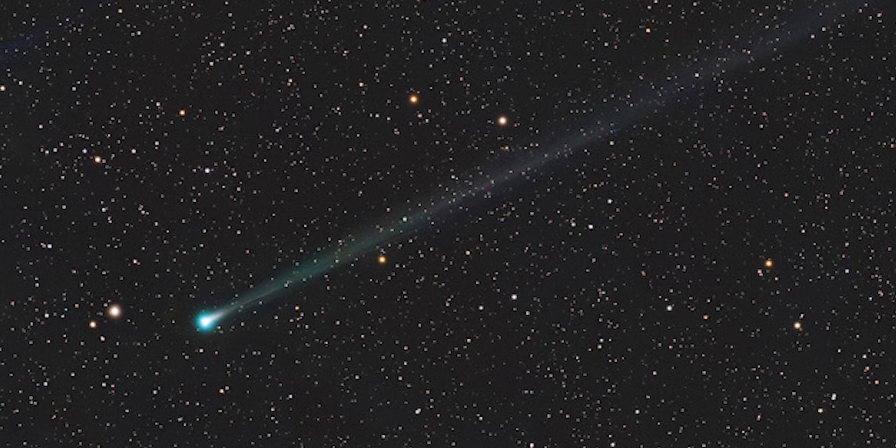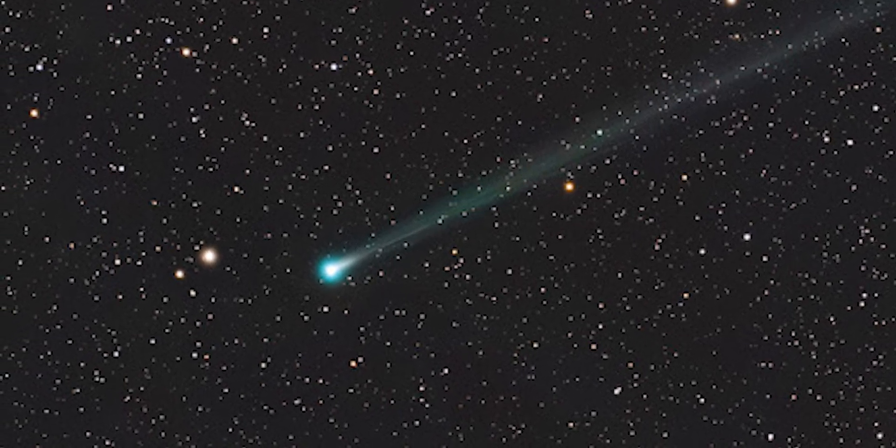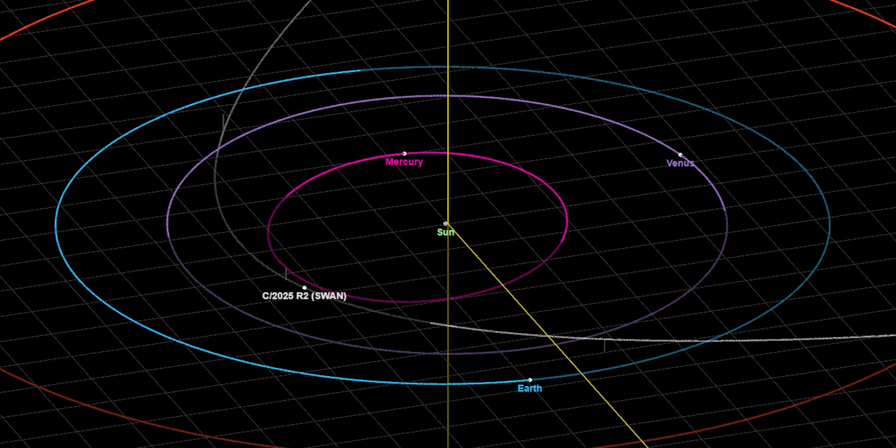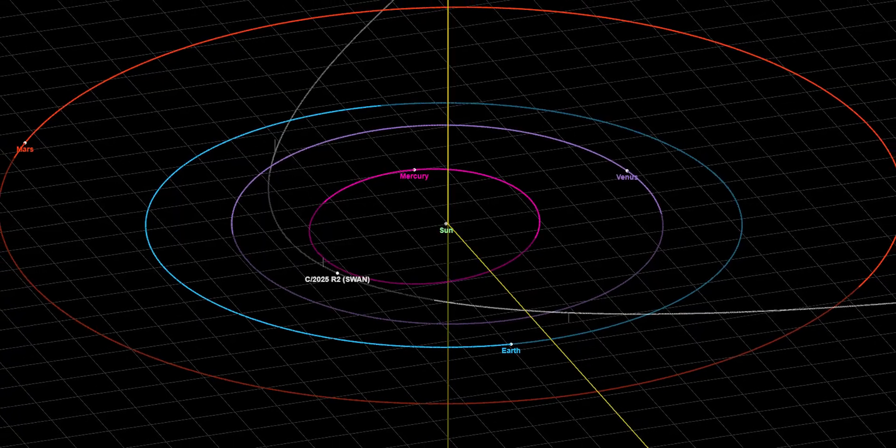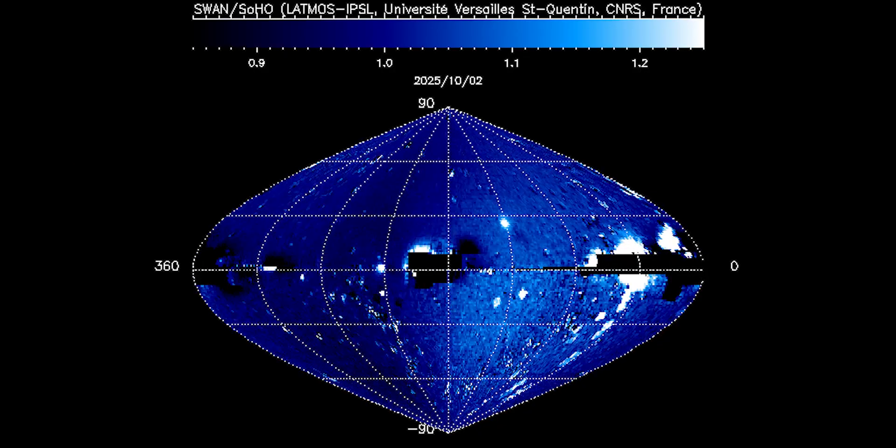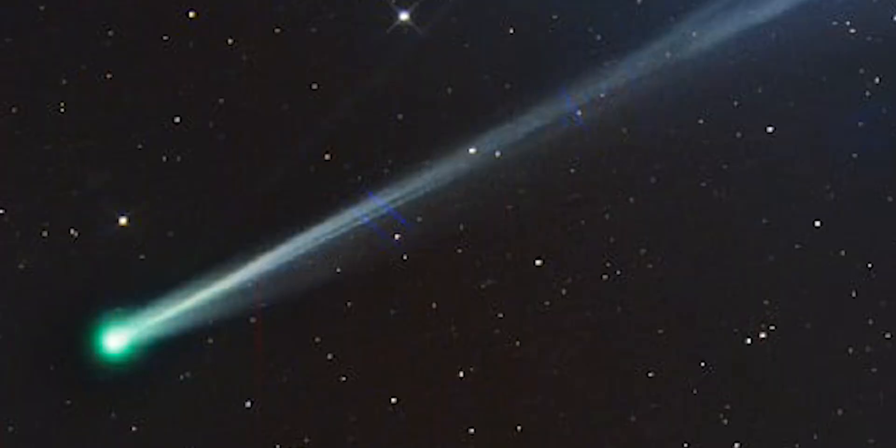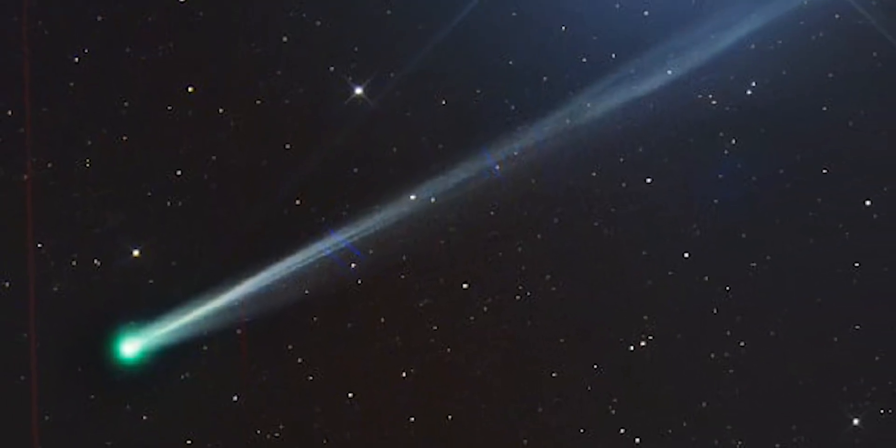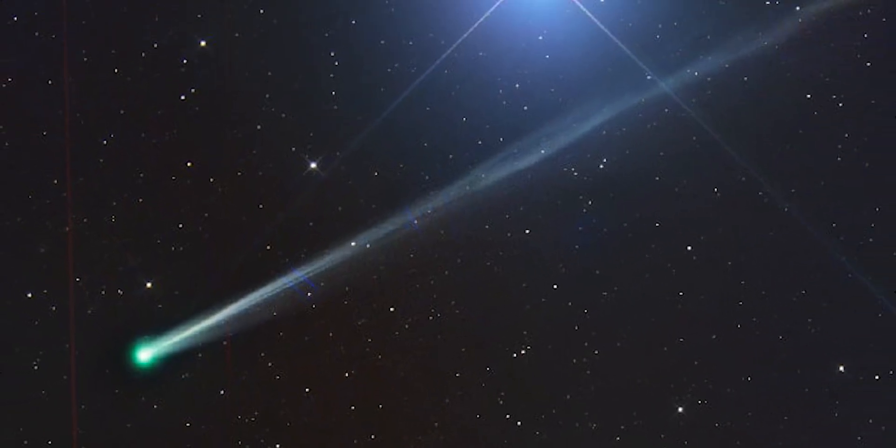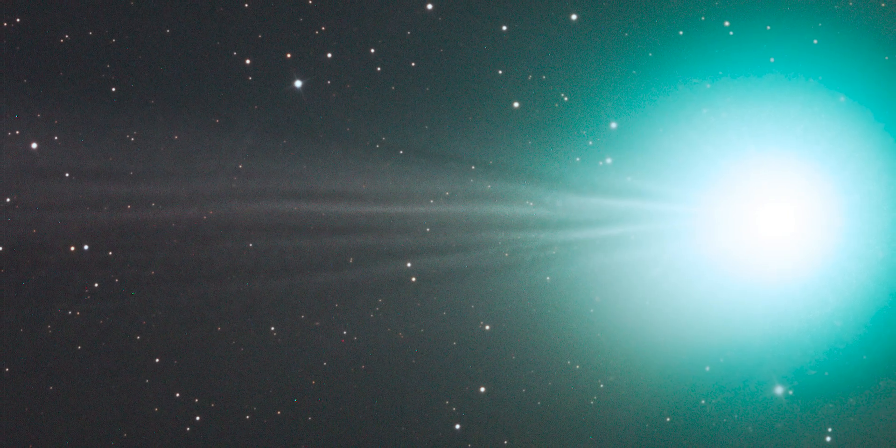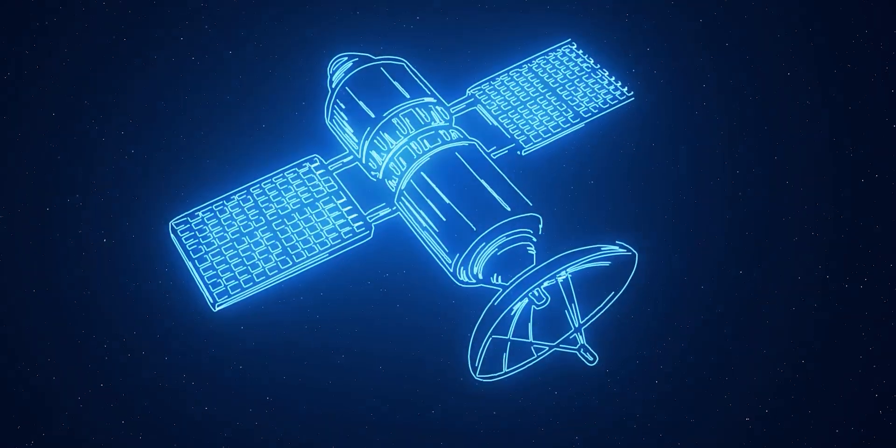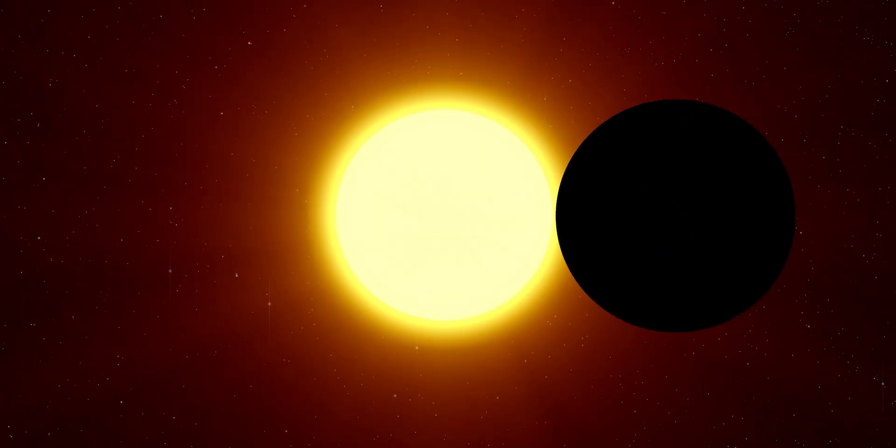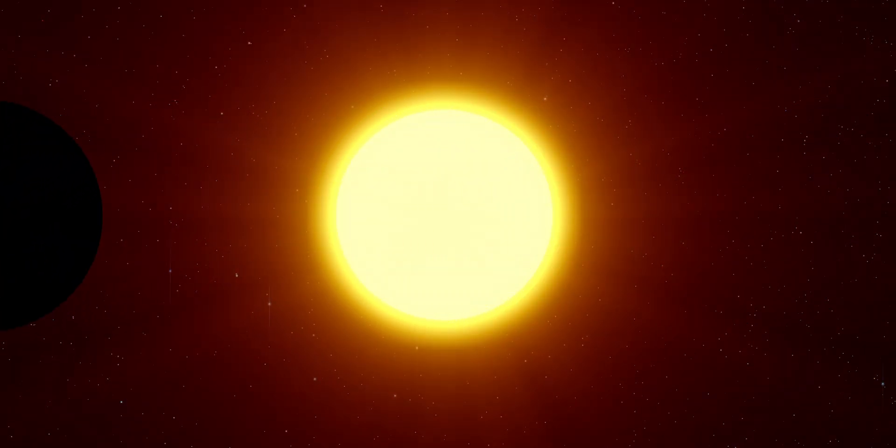C-2025R2, the comet now known as SWAN, drifted through that blind corridor for nearly a month. It brightened, shed gas and dust, and reached its closest point to the Sun, all while hidden in plain sight. Had Bezugli not noticed the ultraviolet flare, it might have slipped past entirely. A hundred million ton mass of ice and rock passing within reach of Earth, never recorded, never named. For scientists, the discovery wasn't just about a comet. It exposed a deeper truth: that our surveillance of the solar system still depends on geometry and luck. And when the Sun is in the way, even the biggest sky on Earth can turn completely dark.